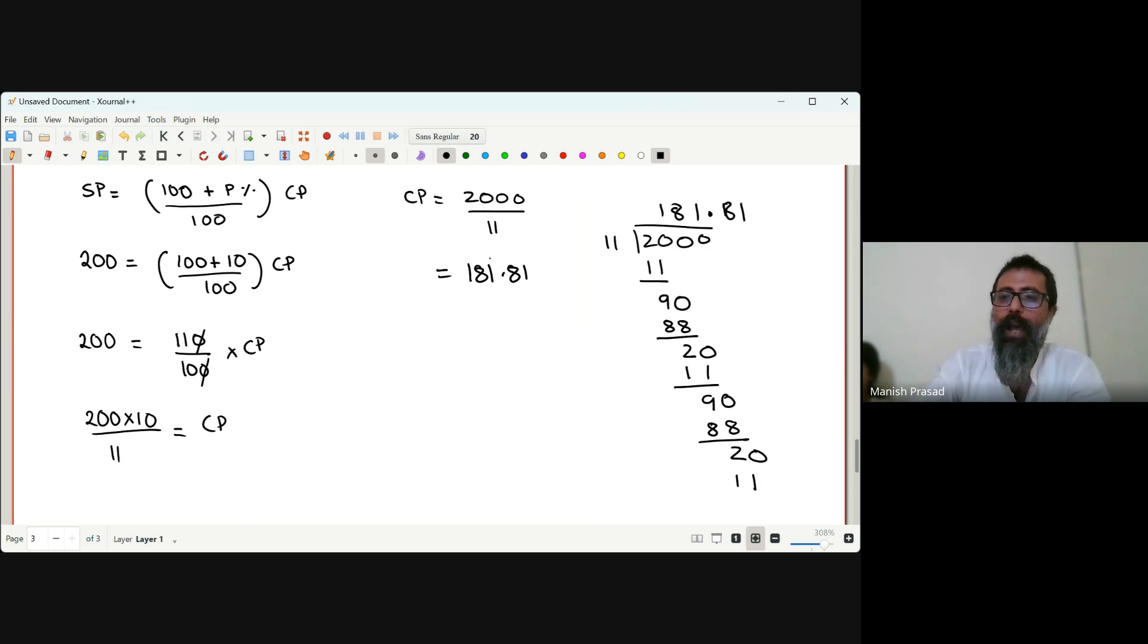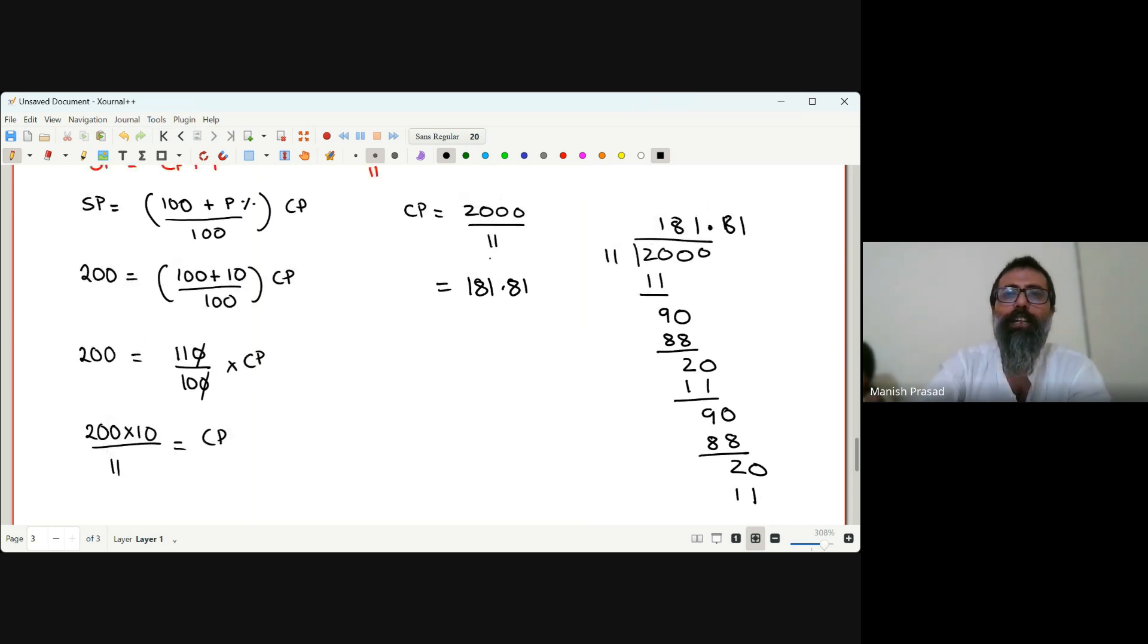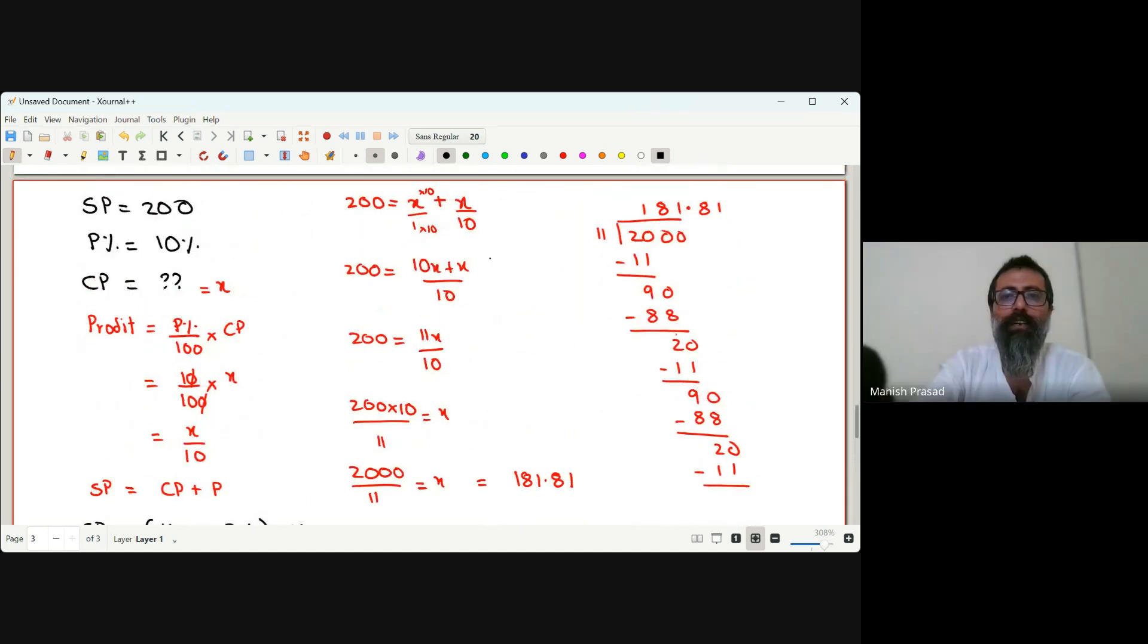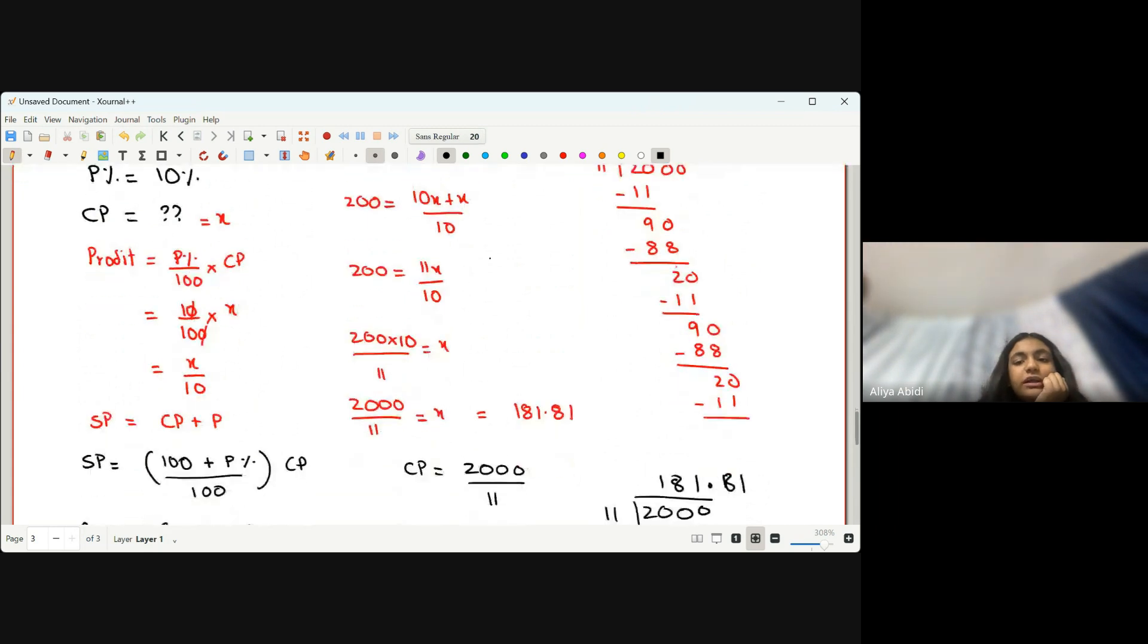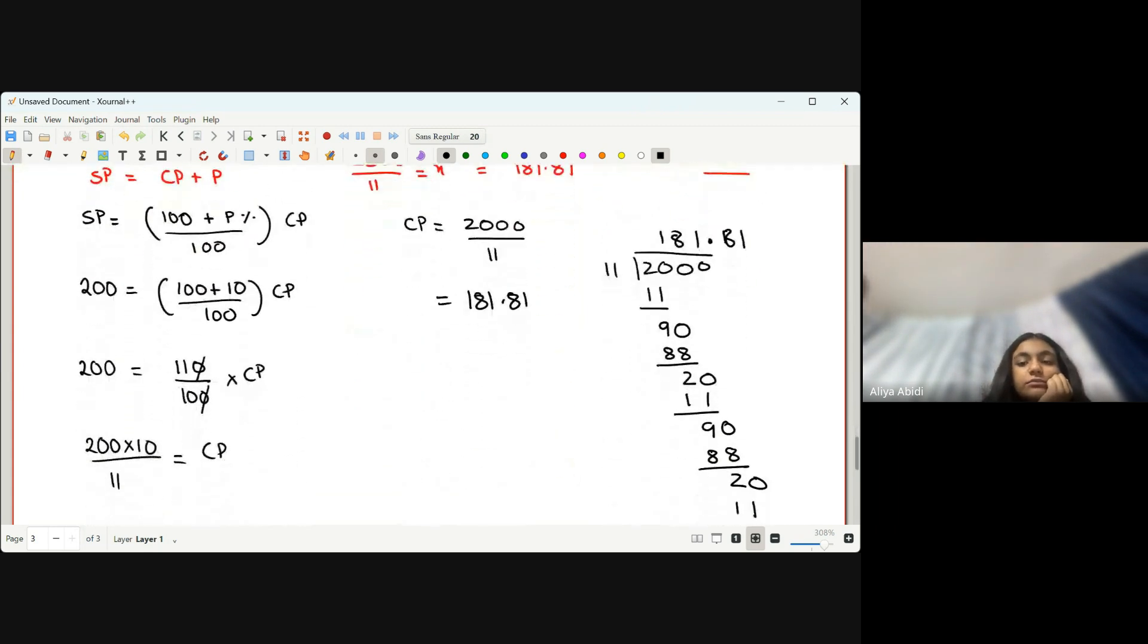Why did you put the dot after one, why not after eight? Because till this zero I can divide it normally.